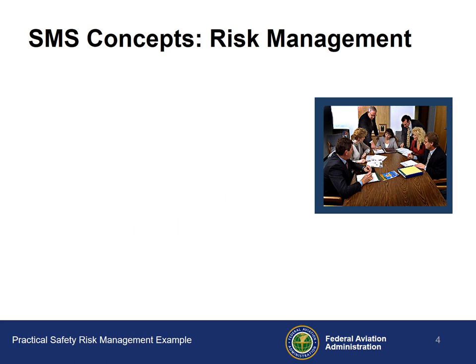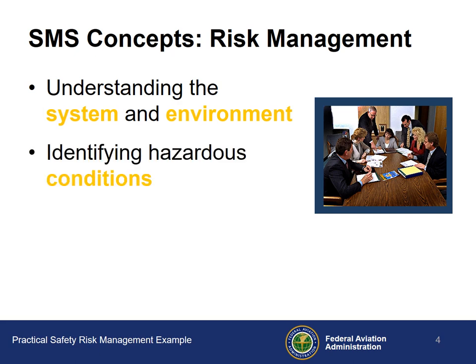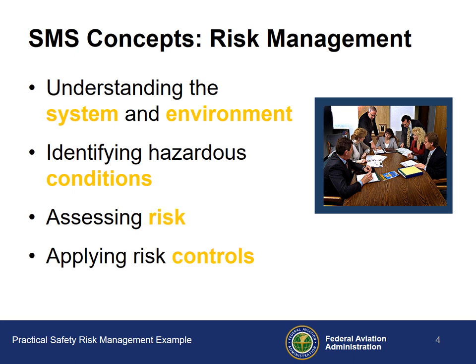Let's review and emphasize the key aspects of risk management. First, we have to have a firm grasp on the systems, the operations, and the operational environment that is involved. This allows us to identify potential hazards such as system problems, operational task difficulties, and the environmental conditions that could pose a risk to the organization. Now that the risk has been established, you can determine the likelihood and severity of that risk, thus allowing you to make an informed decision about risk acceptability and the need for risk controls.